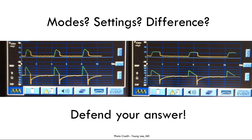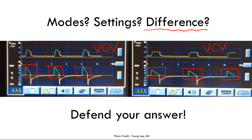Now two more waveforms — what is the mode of each patient, the settings, and the difference? For the first patient, the flow looks like the independent variable — smooth and preset — so flow is the target variable, making this volume control ventilation. For the second patient, the flow is also the target variable — it looks smooth, not erratic — so this is also volume control ventilation. What's the difference?